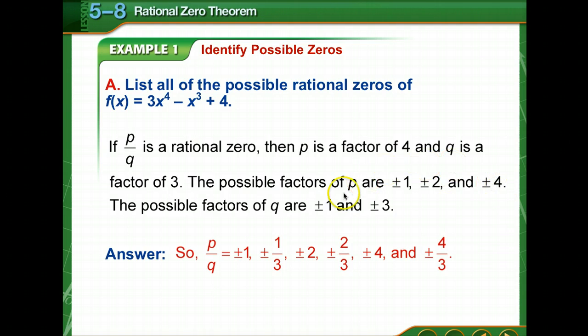Or it could be 4 over 1, which is plus or minus 4, or 4 over 3, so plus or minus four-thirds. See how we got those answers? We took each individual factor of p and placed it over q, then placed it over the other factor of q. It doesn't matter how many p's or q's you have; put each p over each q.